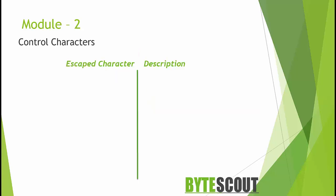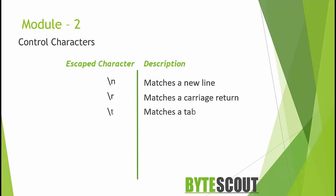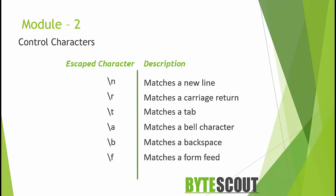Now let us move ahead. You may think: what about matching control characters like newline, carriage return, or tab? You can add those to your regular expression the same way as literals. Some control characters include: \n which matches a newline, \r which matches a carriage return, \t which matches a tab, \a which matches a bell character, \b which matches a backspace, and \f which matches a form feed.